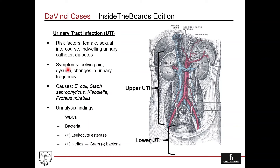As far as symptoms go, the classic ones are pelvic pain or dysuria — which is painful urination, which our patient has — and changes in urinary frequency, such as feeling like you have to go to the bathroom much more often or having trouble getting there on time. Some of the bacterial causes the USMLE likes to ask about are E. coli — the most common — Staph saprophyticus, Klebsiella, and Proteus.